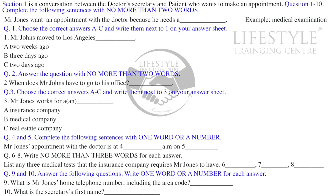You'll hear a number of different recordings and you'll have to answer the questions on what you hear. There will be time for you to read the instructions and the questions, and you'll have a chance to check your work. All the recordings will be played once only. The test is in 4 sections. Write all your answers in the question booklet. At the end of the test, you'll be given 10 minutes to transfer all your answers to an answer sheet.